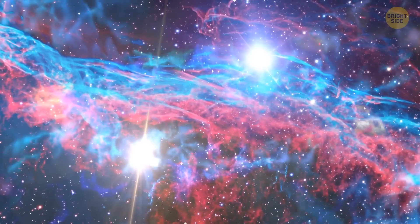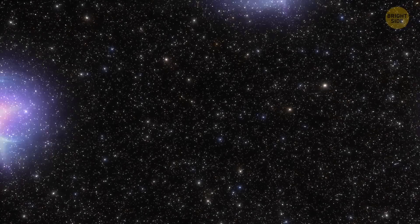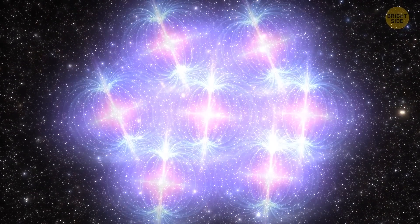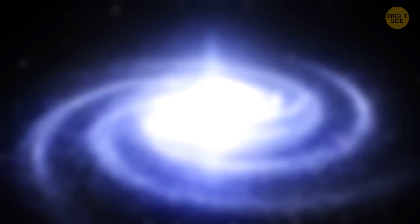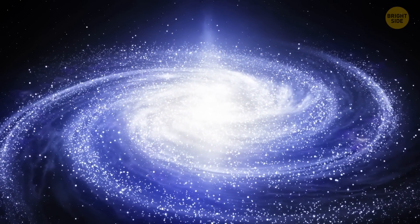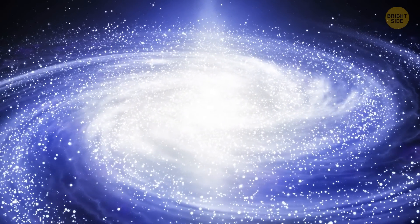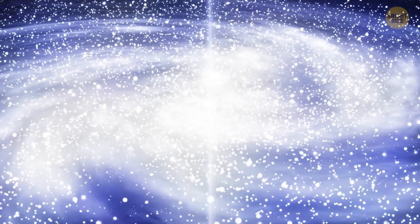Besides, the pulsar theory has one more catch. Why would so many of them be clustered together in a perfect sphere around the center of the Milky Way? Probably, the clusters of stars that orbit the Milky Way could have been disrupted by the galaxy's gravity. As a result, these spilled stars, including pulsars, later formed a spherical shell around the center of the Milky Way.